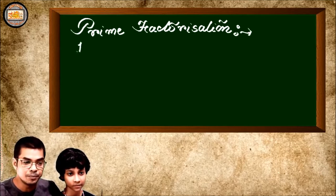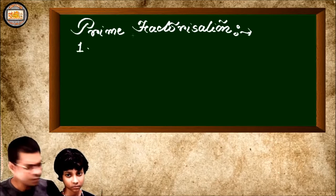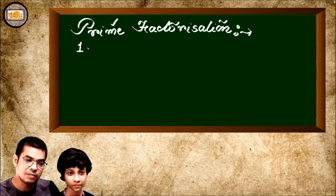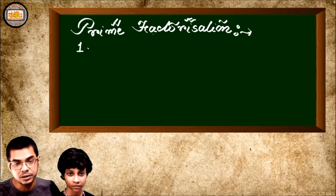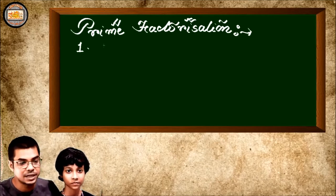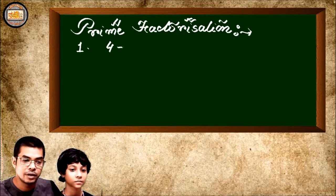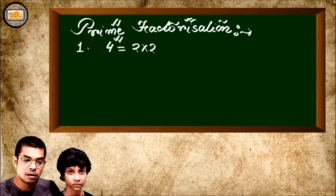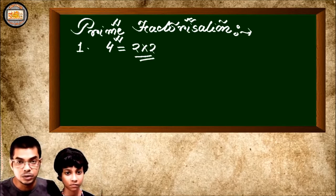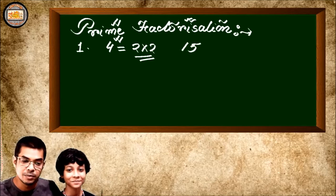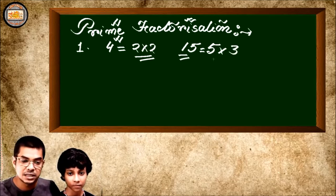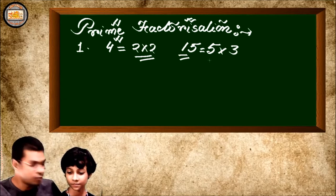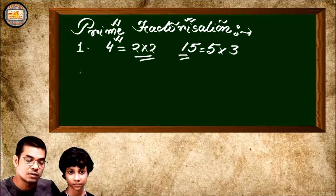Let's begin prime factorization. First, let me tell you some key points. Factorization means when a number is produced as a product of some other numbers. For example, 4 can be written as 2 into 2 — that is factorization. Similarly, 15 can be written as 5 into 3, presenting 15 as the product of two numbers.